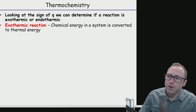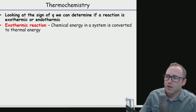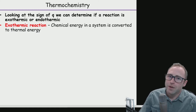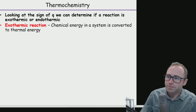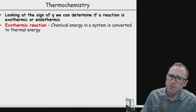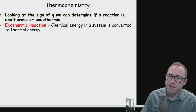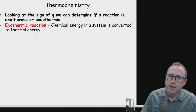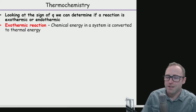An exothermic reaction, in chemistry, is a chemical reaction in a system in which energy is converted to thermal energy. So we've got some reaction taking place and the chemical energy — like energy stored in bonds — is getting converted into thermal energy, heat.